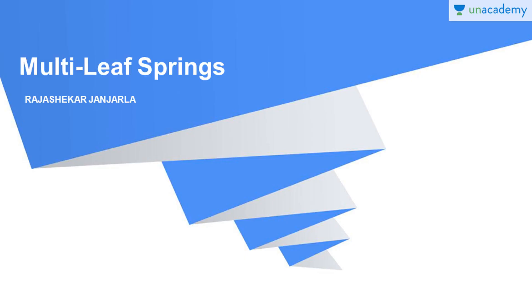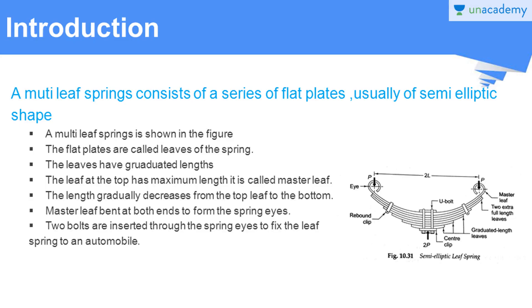Welcome again to multi-leaf springs. A multi-leaf spring consists of a series of flat plates, usually of semi-elliptic shape. A multi-leaf spring is shown in the figure, where you can find a semi-elliptic leaf spring.